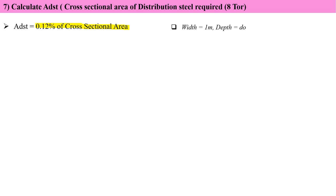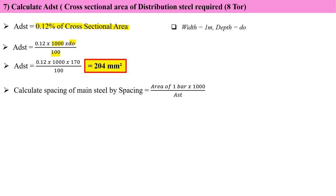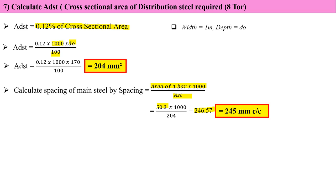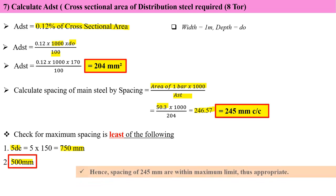Calculate the distribution steel ADST. Formula: ADST = 0.12% × cross-sectional area = (0.12 / 100) × 170 × 1000 = 204 mm². Spacing = (78.5 × 1000) / 204 = 384.8 mm c/c. As per IS Code, maximum spacing is the lesser of 5de (= 750 mm) and 500 mm, giving 500 mm. Providing 245 mm c/c, which is within the permissible limit.